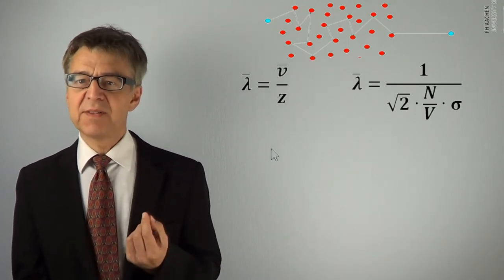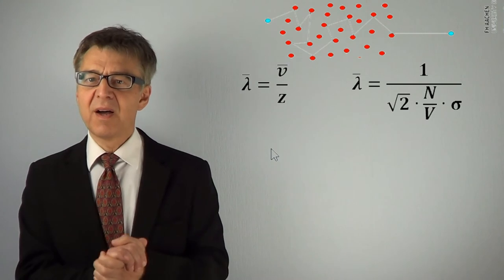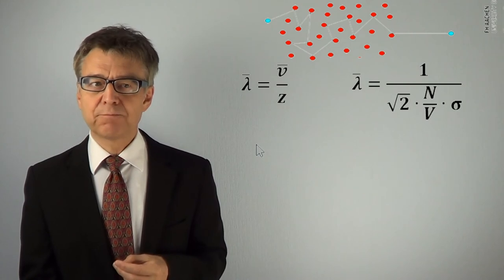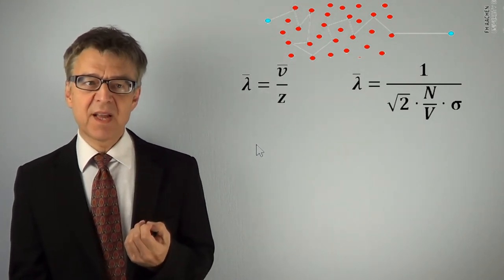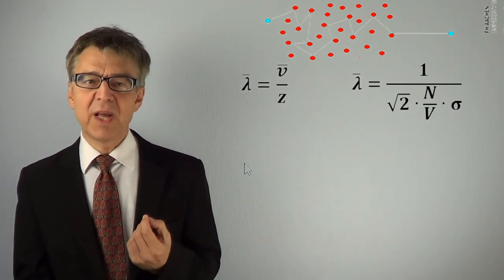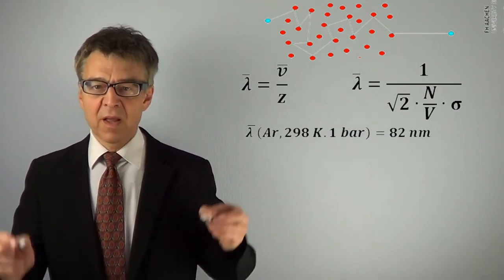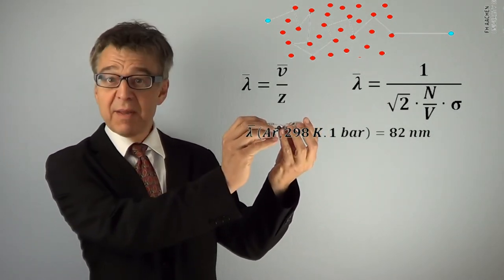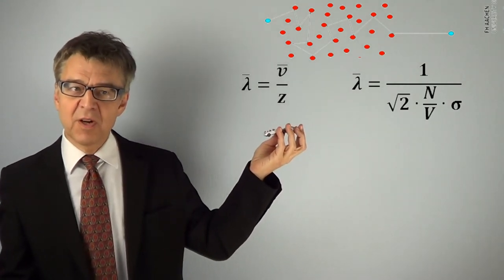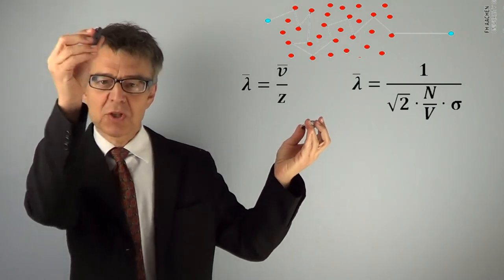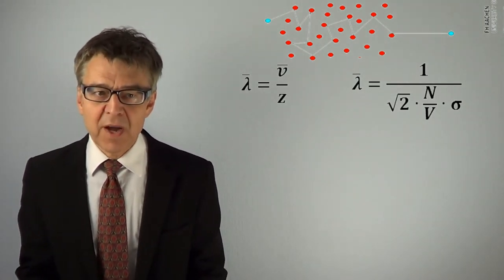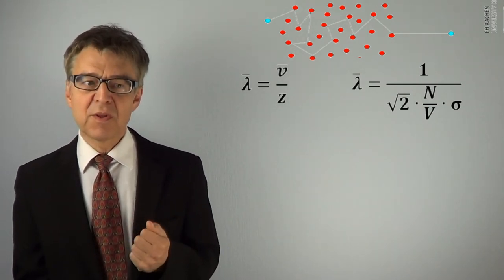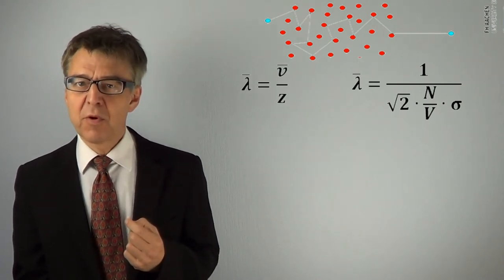Eventually, we obtain this equation, lambda bar equals 1 over square root of 2 N over V sigma. With the known data of argon at standard conditions, we obtain lambda bar equals 82 nanometers. A gas particle moves about 400 times as far as its own diameter before it collides with another particle and so changes direction and velocity. By comparison, the average distance between two gas molecules in argon at standard conditions is only 3.5 nanometers, so the drawing is not to scale.